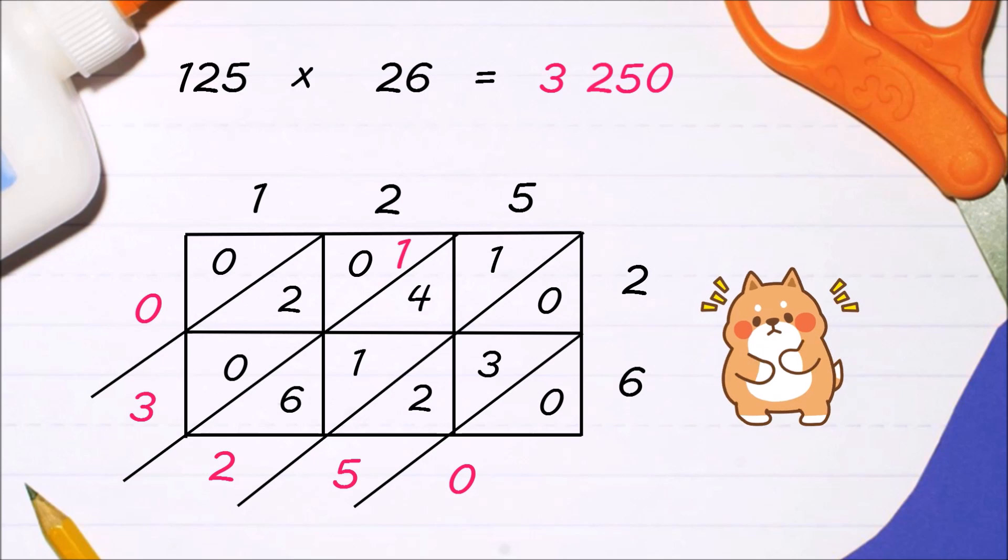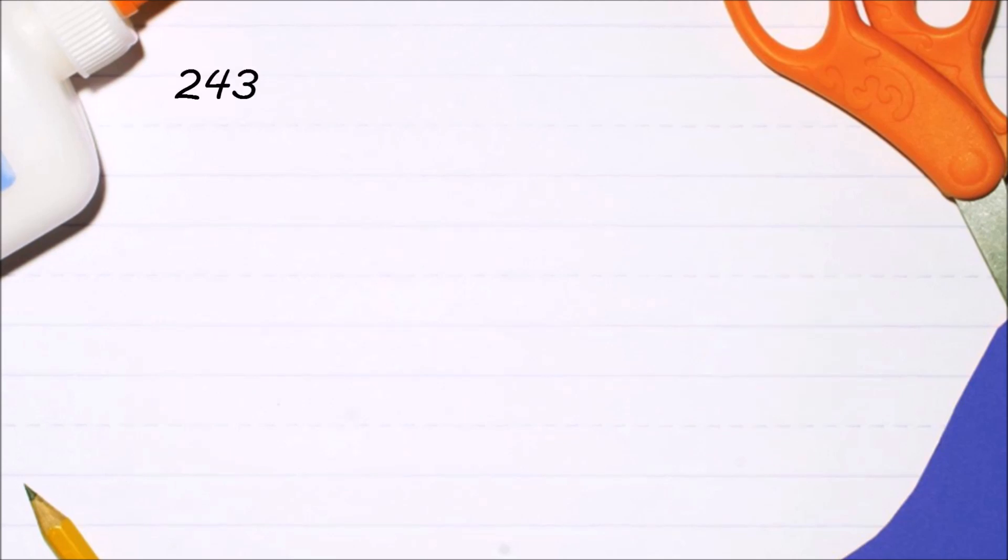For the last example, multiply 243 and 527.